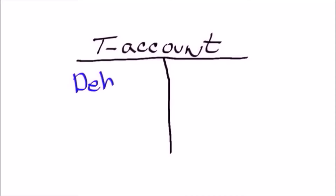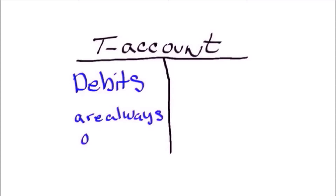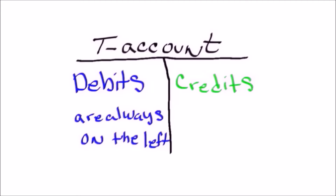When you're using a t-account, what you always have to remember is debits go on the left side of the t-account. So when you're recording a transaction and you realize that transaction is a debit, right away you know it goes on the left side. On the right side of a t-account, that's where your credits are recorded. So if you've analyzed the transaction and you realize that it's a credit, then right away you know it has to go on the right side of your t-account.